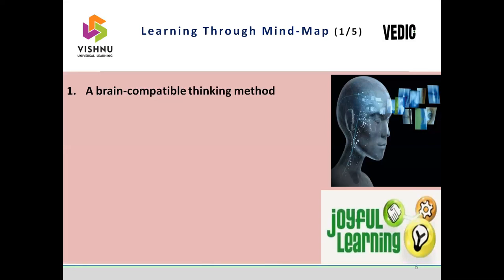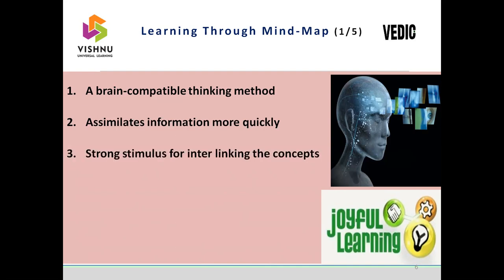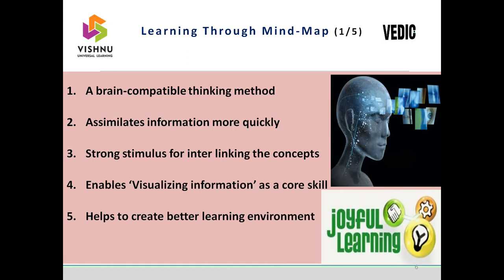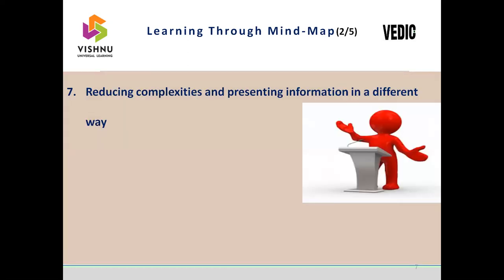How does the mind map help in learning? What are the advantages of using a mind map, how it improves learning and thinking? Mind map is a brain-compatible thinking method. It helps to assimilate information more quickly, grasp facts more quickly, and gives a strong stimulus for interlinking concepts. It enables visualizing information as a core skill, creates a better learning environment, enables joyful learning, reduces complexities, and is helpful for effective presentation.